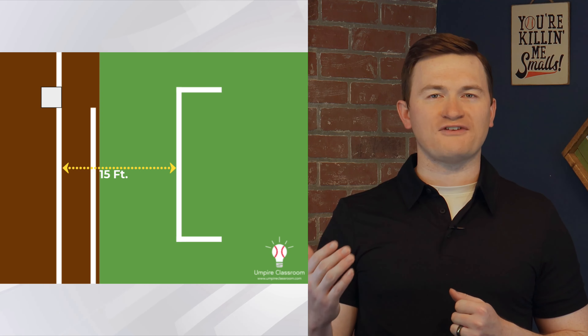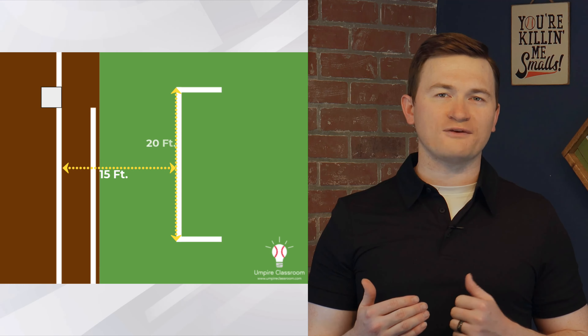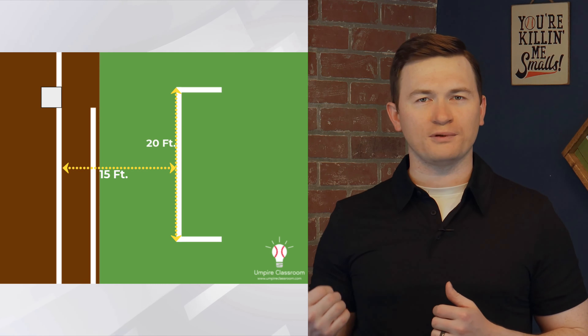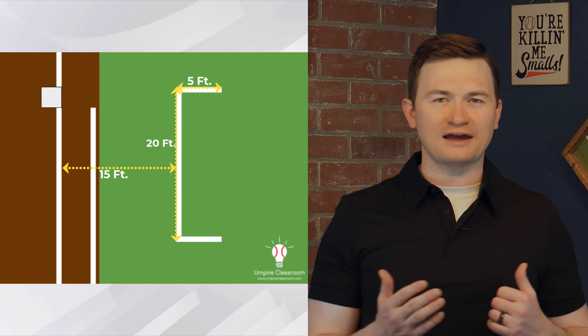Now let's break down where the coach's boxes should be and their dimensions. You can find a diagram of these in Rule 1-2. The box is located 15 feet from the foul line and extends 20 feet from the back edge of the base towards home plate, with a depth of 5 feet. Most likely any field you work on will not have been drawn using any measurements and may not even have been put down — and for the most part, this is going to be okay.